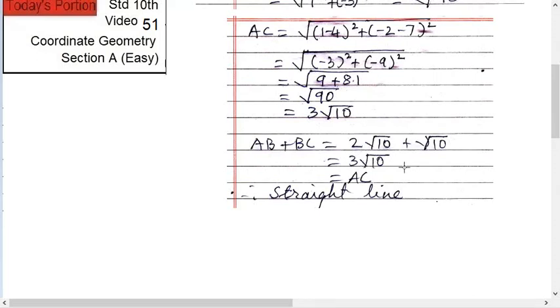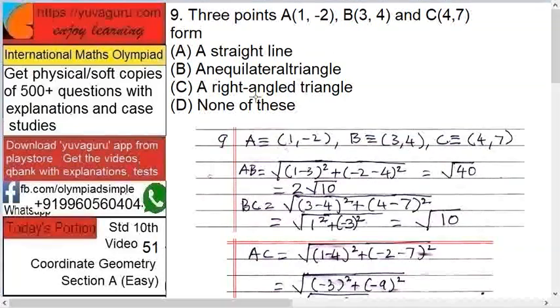Because if they add up and the distance is the same, then there's no chance that they won't be collinear. Okay, how will you find whether these are equilateral triangle?